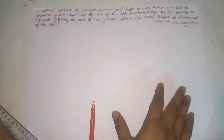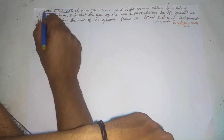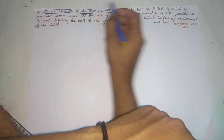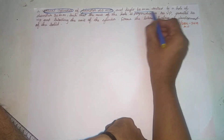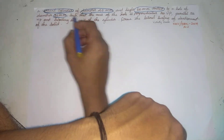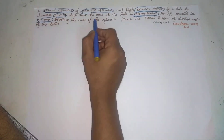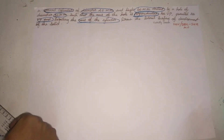Hi friends, welcome to ArettyTrack. I am on the 9th December of 2019. This vertical cylinder of diameter 40 mm and height 60 mm is drilled by a hole of diameter 30 mm such that the axis of the hole is perpendicular to the VP and parallel to the HP, and bisects the cylinder axis. This is the lateral surface that we developed.